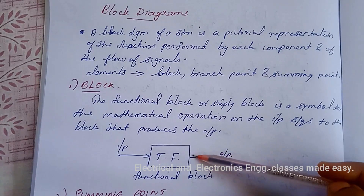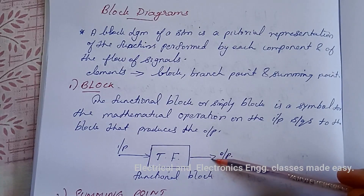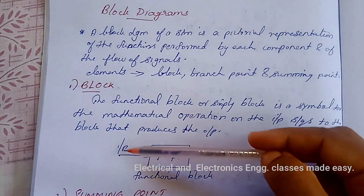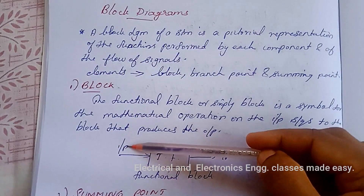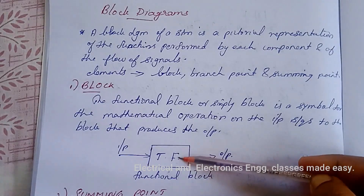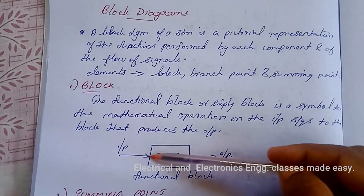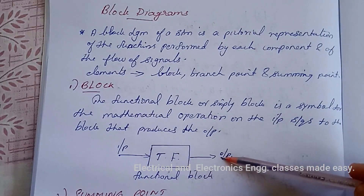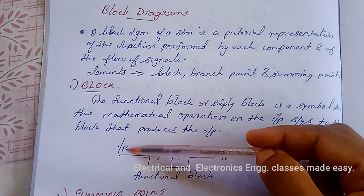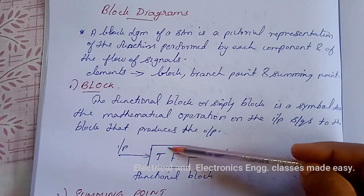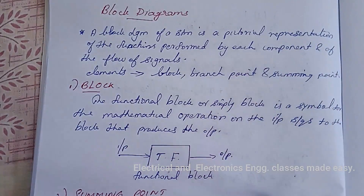The output signal from the block is given by the product of the input signal and the transfer function in the block. So output equals the product of input and the transfer function.